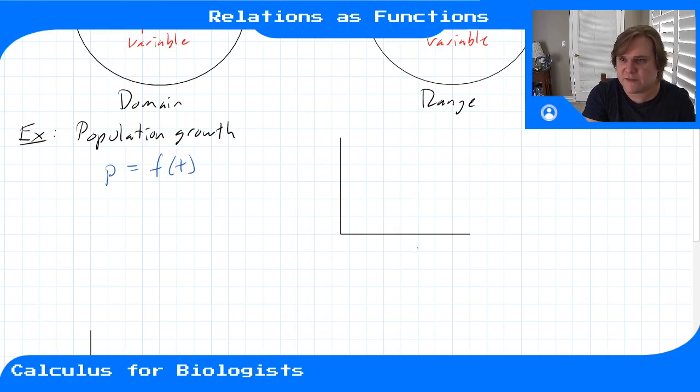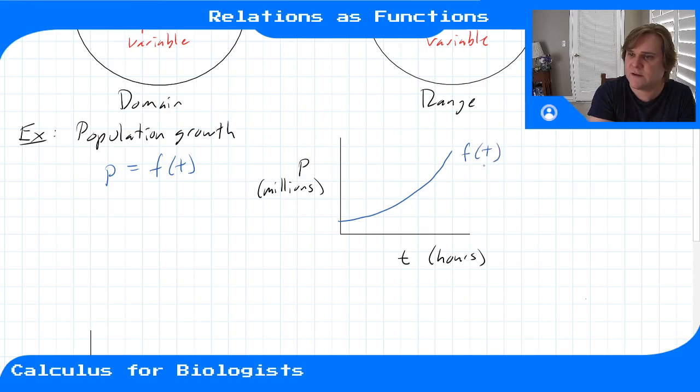So in a graph, this looked like we had t on our x-axis, since it was our independent variable, in hours, and it mapped to p, the population, in millions. So our function looked something like this, data kind of sat around along this line, this curve.